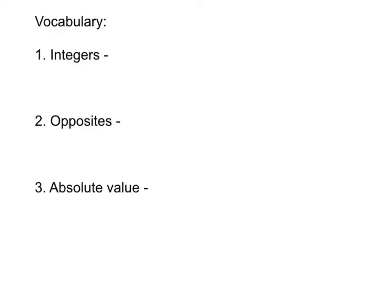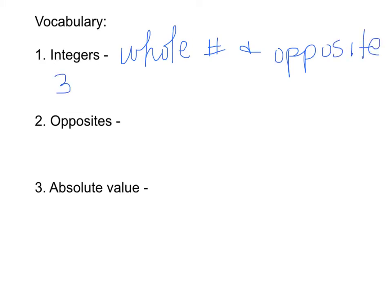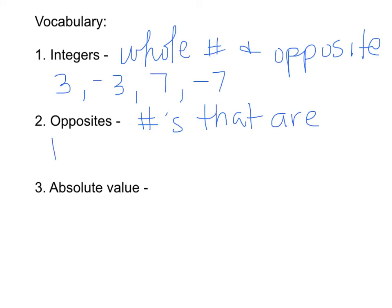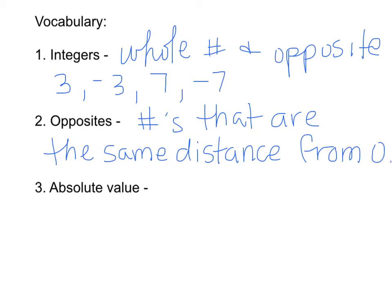Let's look at our vocabulary words for this topic. Integers are the whole numbers and their opposites, which means if we have 3, we would also have negative 3. If we have 7, we would also have negative 7. The opposite refers to numbers that are the same distance from 0, as if on a number line. So if I have 3 and negative 3, they would be the same distance from 0.